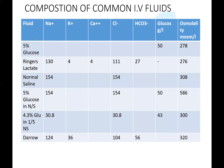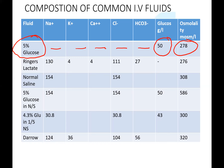5% dextrose water contains 50 grams of glucose in one liter of water. These bags come in either 500 mls or one liter. The osmolality of 5% dextrose water is 278 mOsm. Ringer's lactate has an osmolality similar to that of plasma, which is what makes it the most physiologic crystalloid.